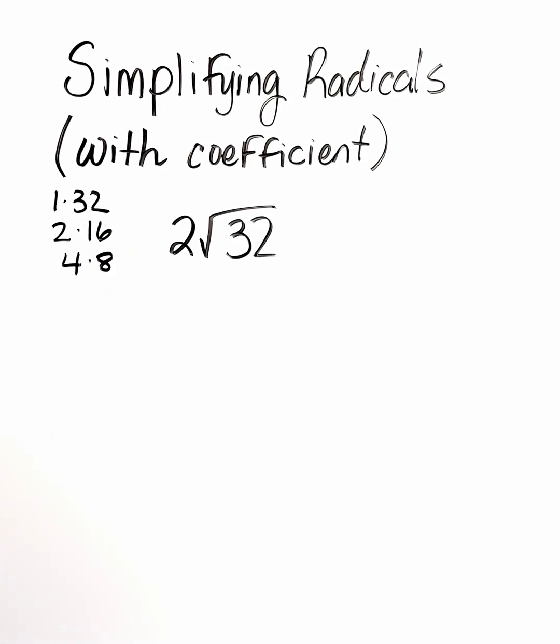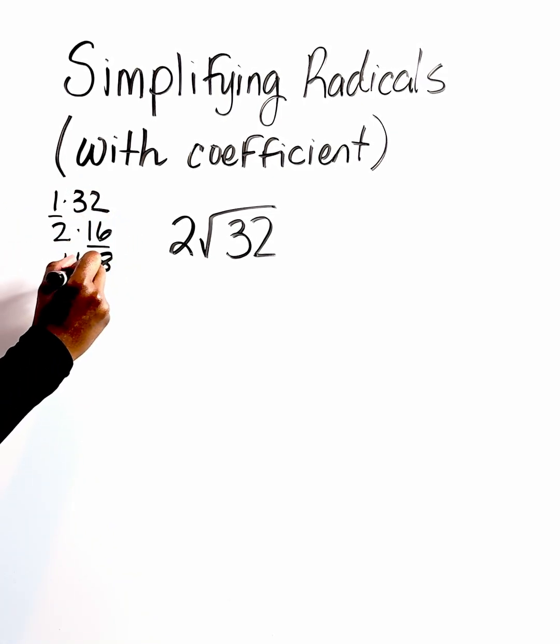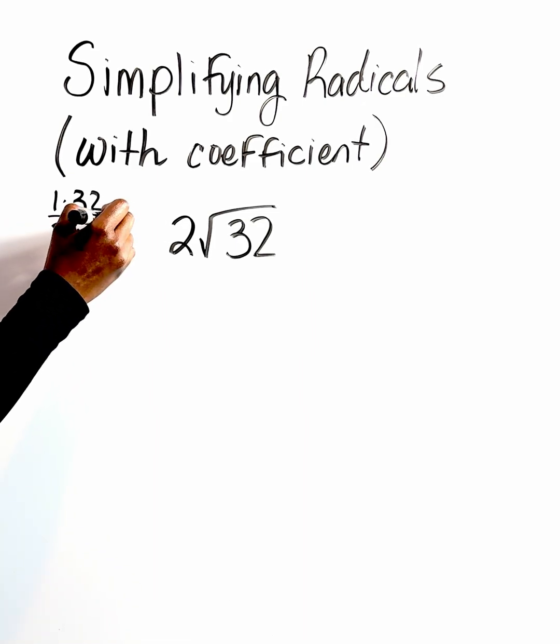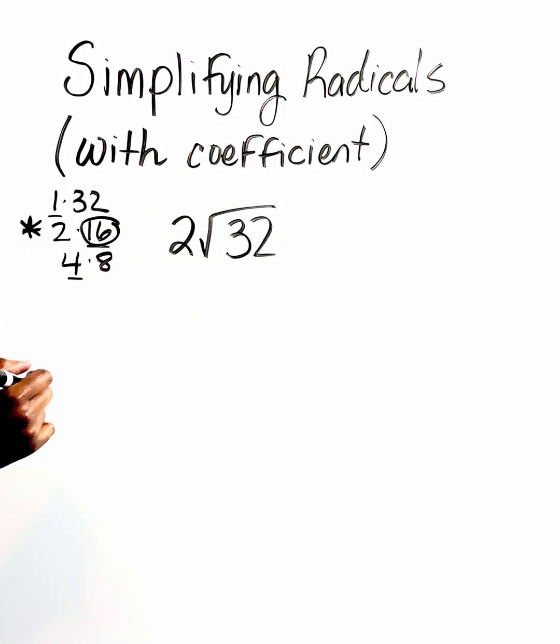And the goal, of course, is to identify what our perfect square roots are. So we're going to underline those. We have 1, 16, and 4. Now, based on the numbers that we underline, we're going to choose the largest one, which in this case is going to be 16. So this is going to be the factor pair that we're going to use to simplify this particular radical.